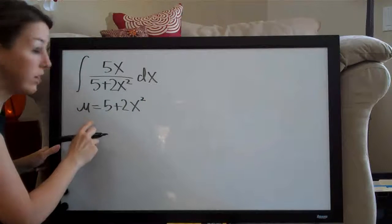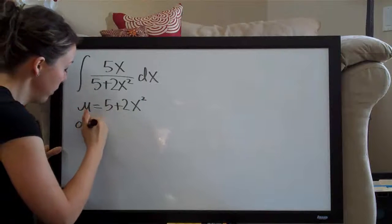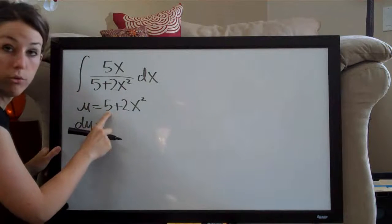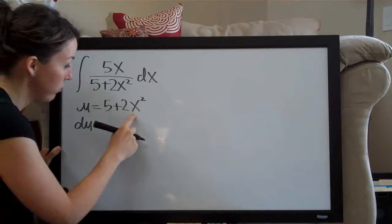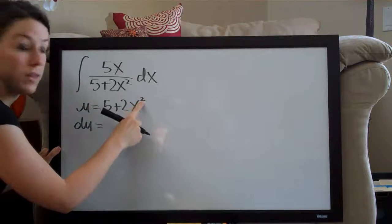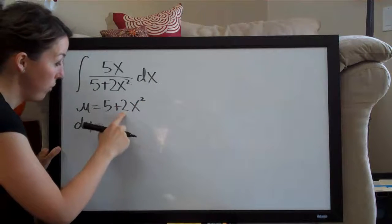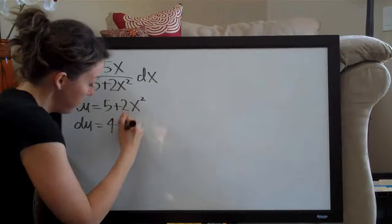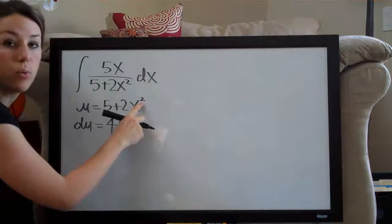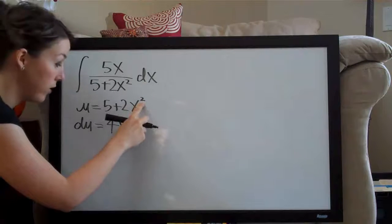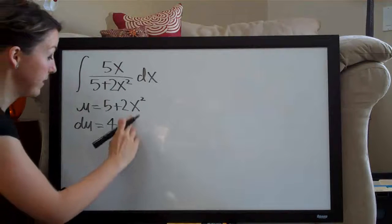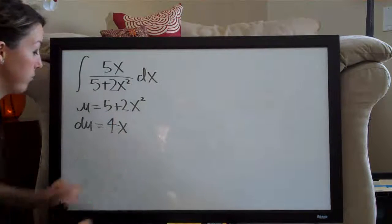Then we're going to take the derivative of u, so we call that du. And the derivative of this, the 5 goes away and 2x squared, remember we multiply 2, the exponent, by the coefficient. So, 2 times 2 is 4 and then we keep the x and then of course we subtract 1 from the exponent. So, 2 minus 1 is 1, but it's implied, so we don't need to write it. The derivative, therefore, is 4x.